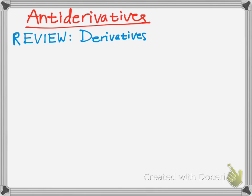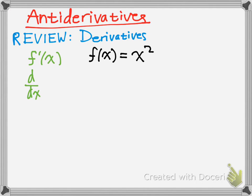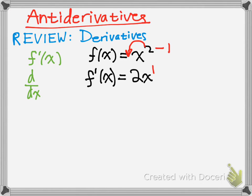We show derivatives as f prime of x, or d/dx of the function. Here's just a basic derivative — f of x equals x squared. What would be f prime? Well, if you know the power rule, it's simple. The answer is 2x. All I did was I took the exponent, brought it up front, and then subtracted 1. That's how you take the derivative using the power rule.